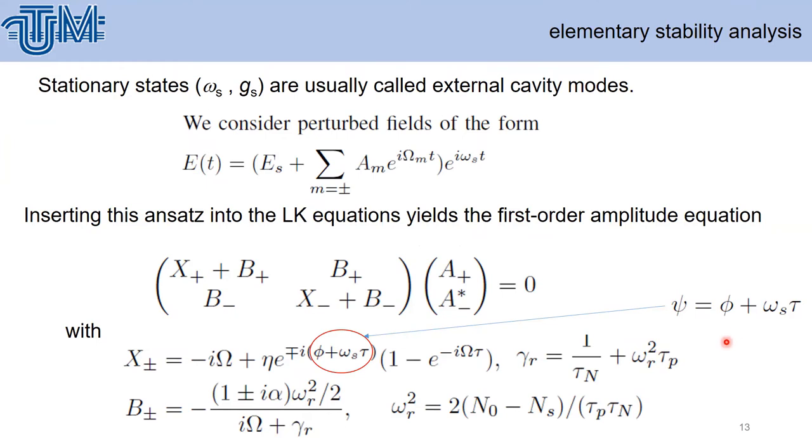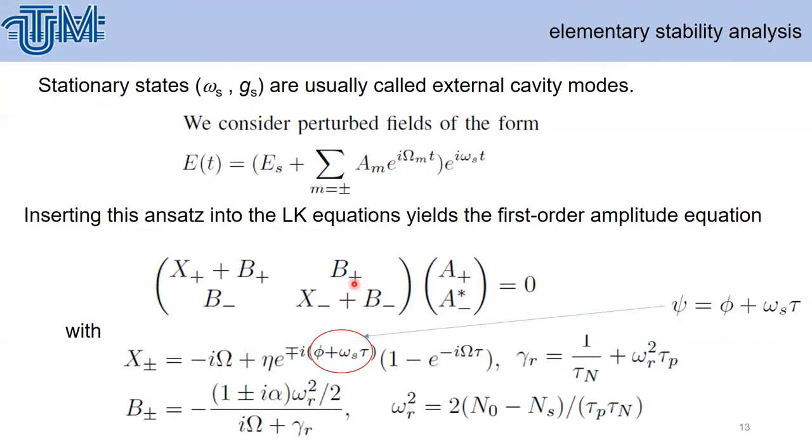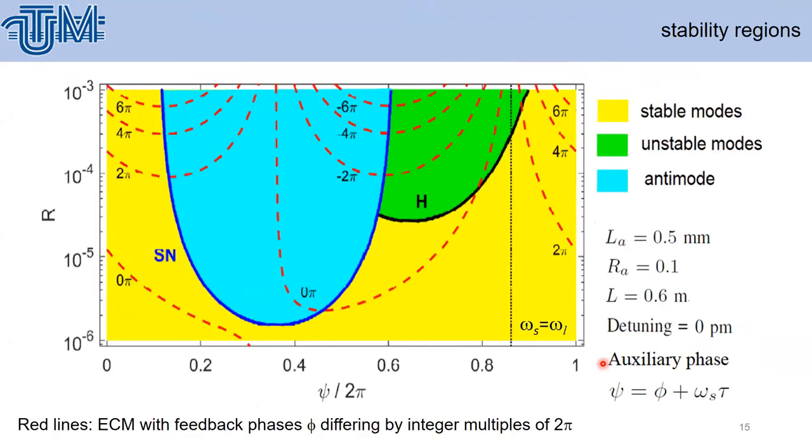This leads to the amplitude equations. We solve these equations by introducing a new phase which includes the external phase and other changes of phase due to reflection. We look for non-trivial solutions requiring vanishing of the determinant of this matrix. For zero detuning, we get these two stations.